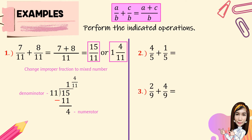For number 2, we have 4 over 5 plus 1 over 5. First, we're going to add the numerators: 4 plus 1. Then copy the common denominator, 5. So 4 plus 1 is equal to 5 over 5. And 5 divided by 5 is equal to 1. That is the final answer.